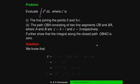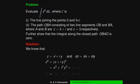Solution: z = x + iy, so dz = dx + i·dy. We expand z² = (x+iy)² = x² + i²y² + 2ixy = x² − y² + 2ixy. Therefore, z² = (x²−y²) + i·(2xy), where the real part is x²−y² and the imaginary part is 2xy.